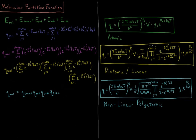Each vibrational mode has its own contribution, and you multiply them together for each individual mode. Linear molecules have 3n − 5 vibrational modes if they have n atoms. The rotational temperatures can be looked up in tables or computed from the vibrational frequencies of the molecule.